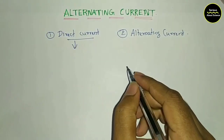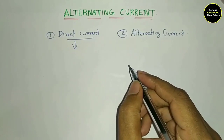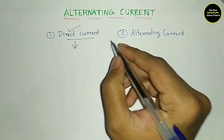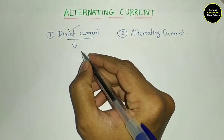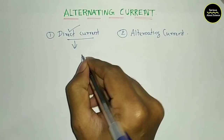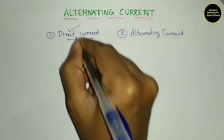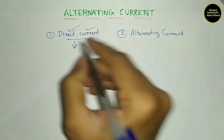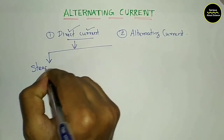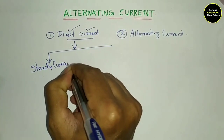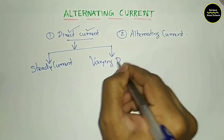One is Direct Current. What is DC? Electric current direction is constant. The main difference is that Direct Current has two types: the first is Steady Current, and the second is Varying Direct Current, DC.